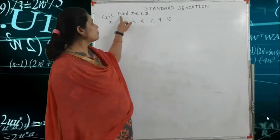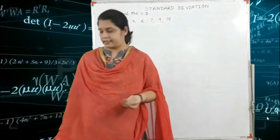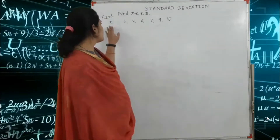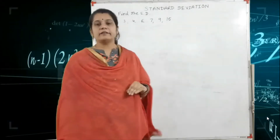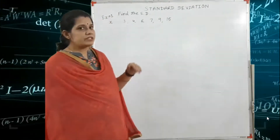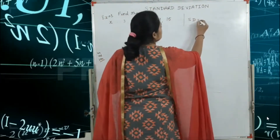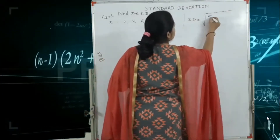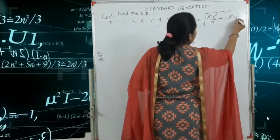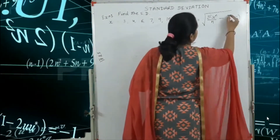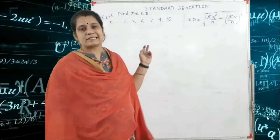Here the example is: find the standard deviation if we are given only the value of x. The value of x is 3, 4, 6, 7, 9 and 15. So first we write the formula of the standard deviation. The formula is: sigma equals the square root of summation x-squared upon n, minus summation x upon n, whole square. This is the formula of the standard deviation.